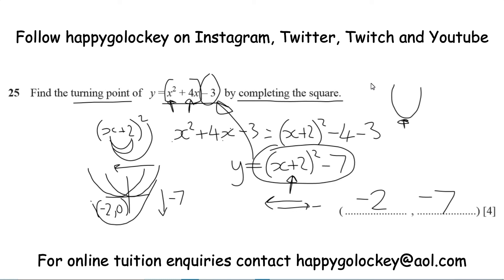Four marks available for that question: two marks for completing the square and finding that it was x plus 2 squared minus 7, and a further two marks for putting the coordinates in the right places. So the turning point of y equals x squared plus 4x minus 3 is (−2, −7). Hope you enjoyed that question. I've been HappyGoLocky, and today you've been finding turning points of a quadratic graph by completing the square. Thanks for watching, and I'll see you again soon. Bye!